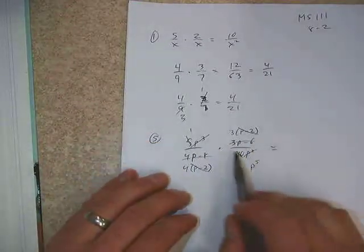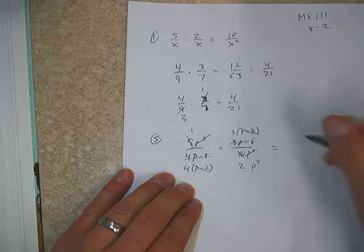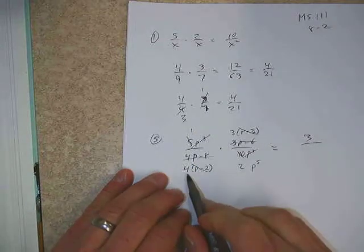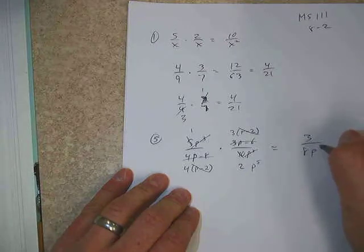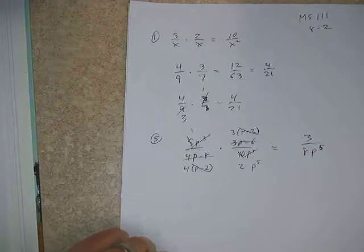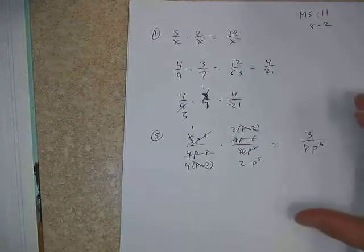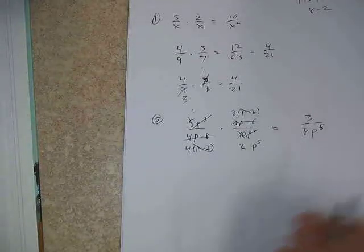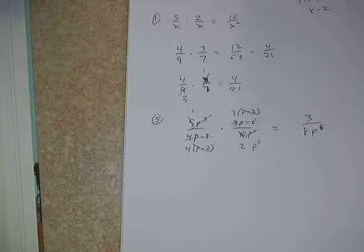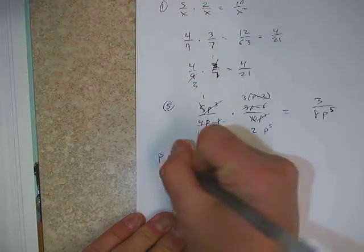And again, what's nice is that we've made this into, from all the stuff that we had into not very much stuff left. Everything else is crossed out. All we have left on top is a 1 and a 3. And all we have left on the bottom is a 4 and a 2p to the 5th. So we ultimately get 3 over 8p to the 5th. And that would be our final answer. So we turned what looked like a fairly complicated function into a fairly simple function when we do the multiplication and we do the reducing first. And the key is doing the reducing part first before we do the multiplication part.